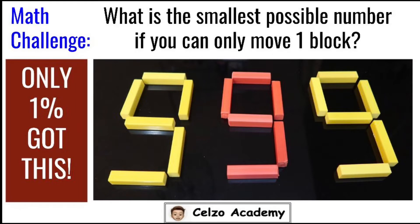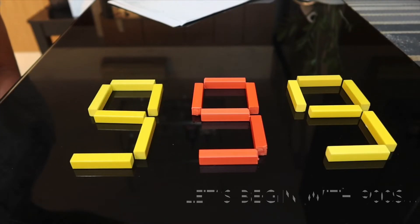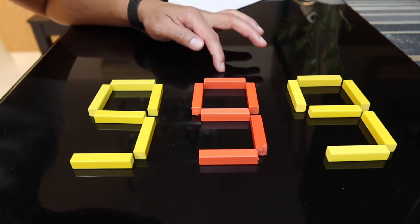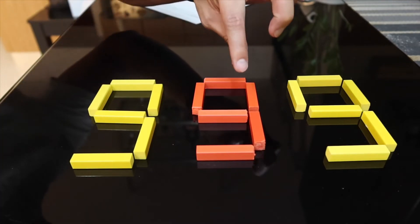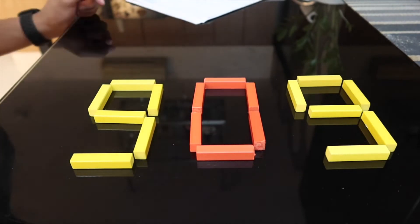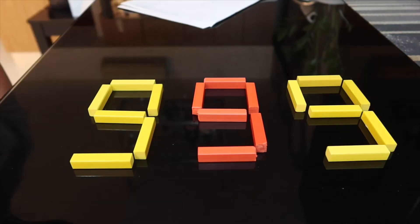What do you think is the smallest number in the nine hundreds? To get the smallest number in the nine hundreds, our goal is to make the tens digit the smallest possible. To do that, we take out one block from the nine and make that nine into a zero, so now we have nine hundred and nine. This is the smallest number in the nine hundreds.